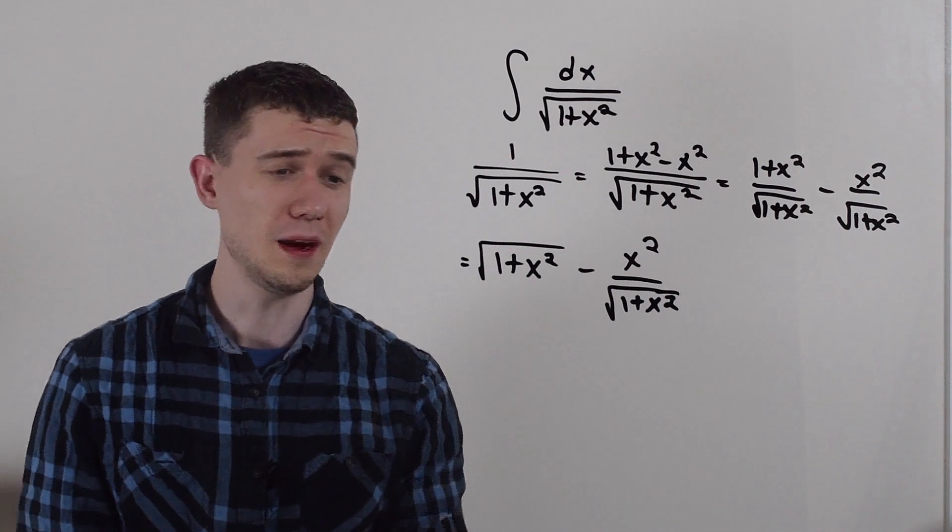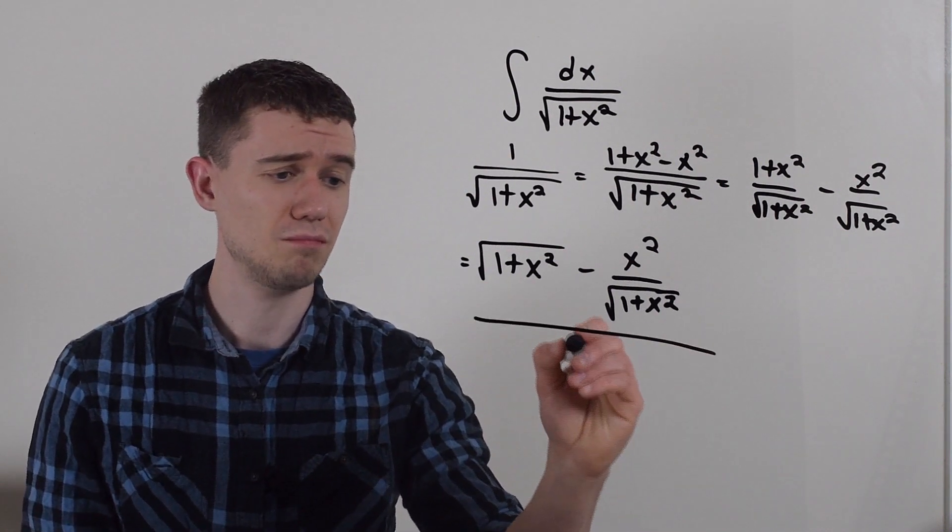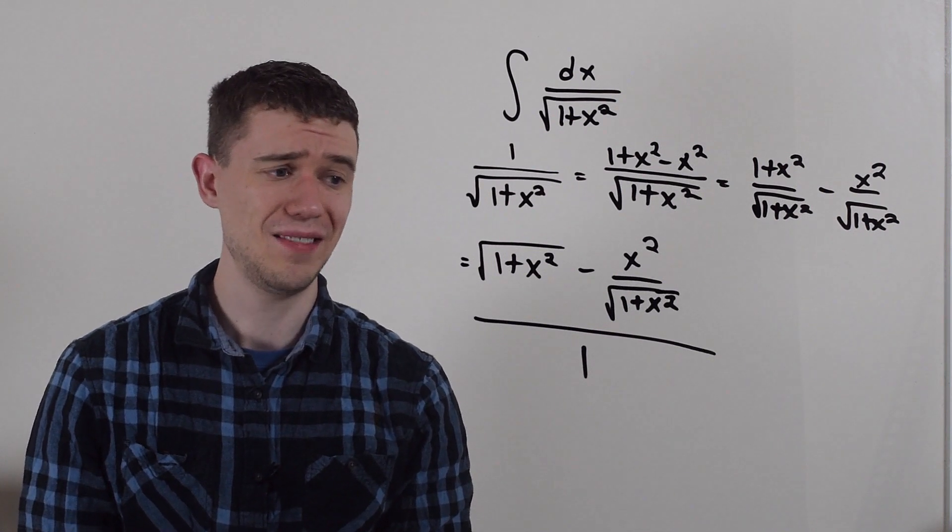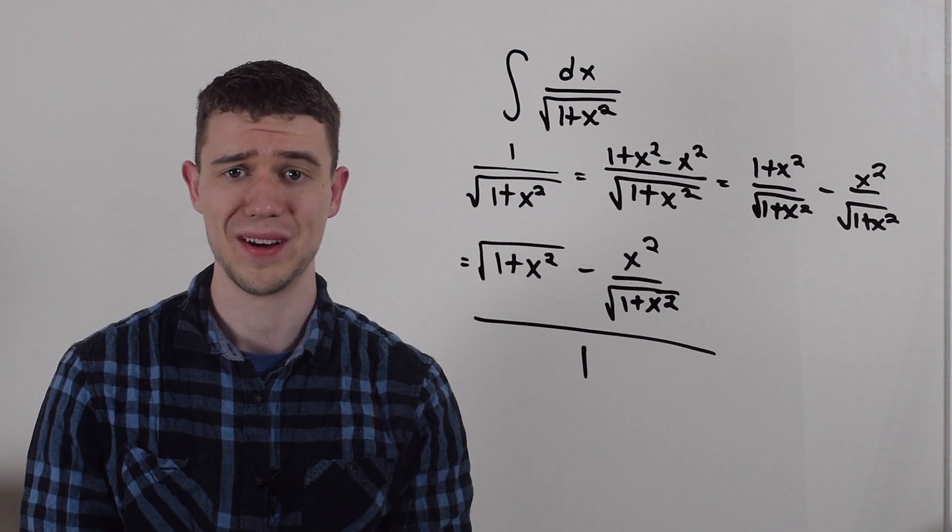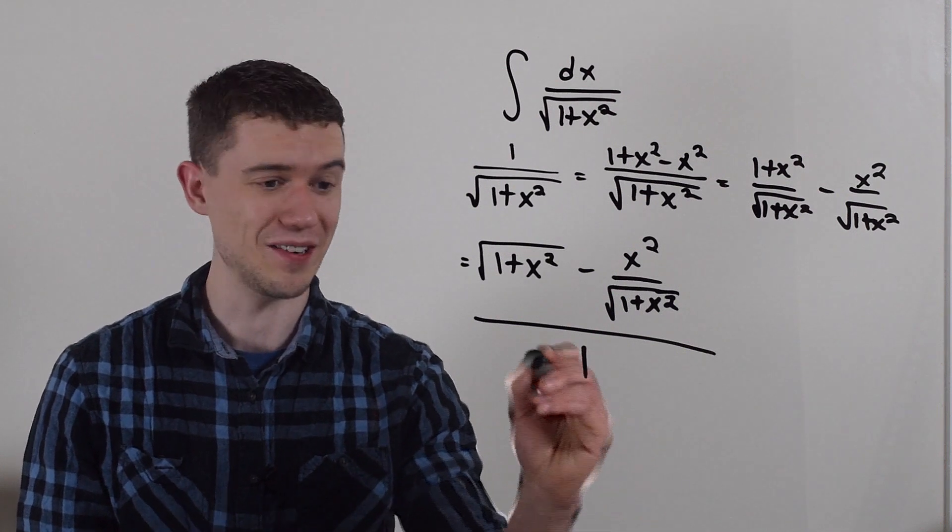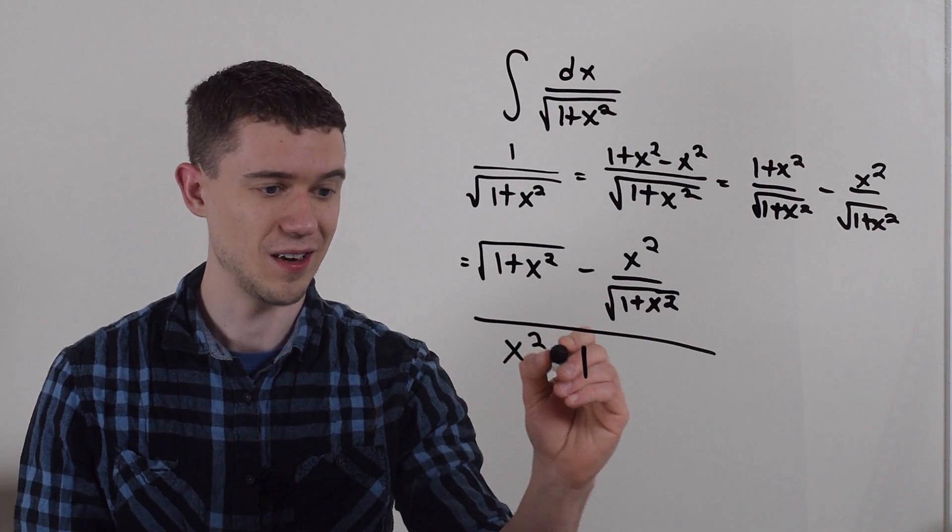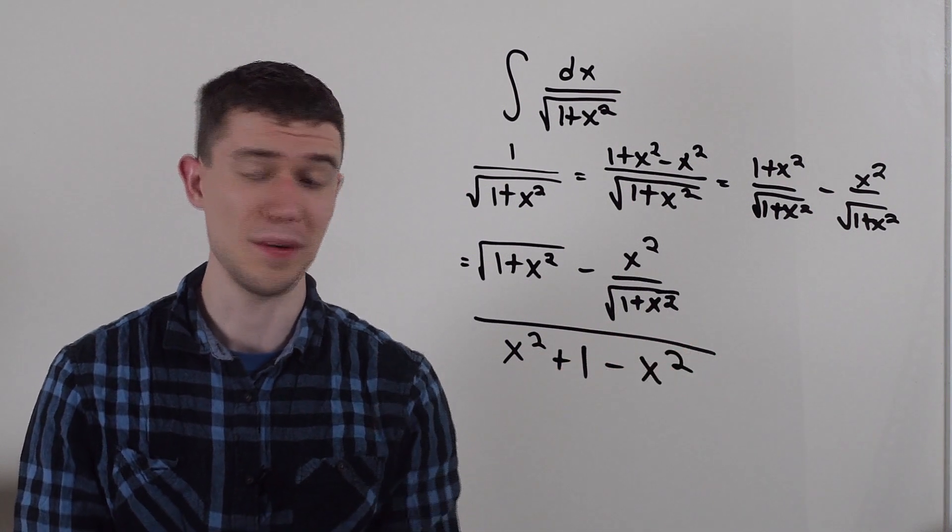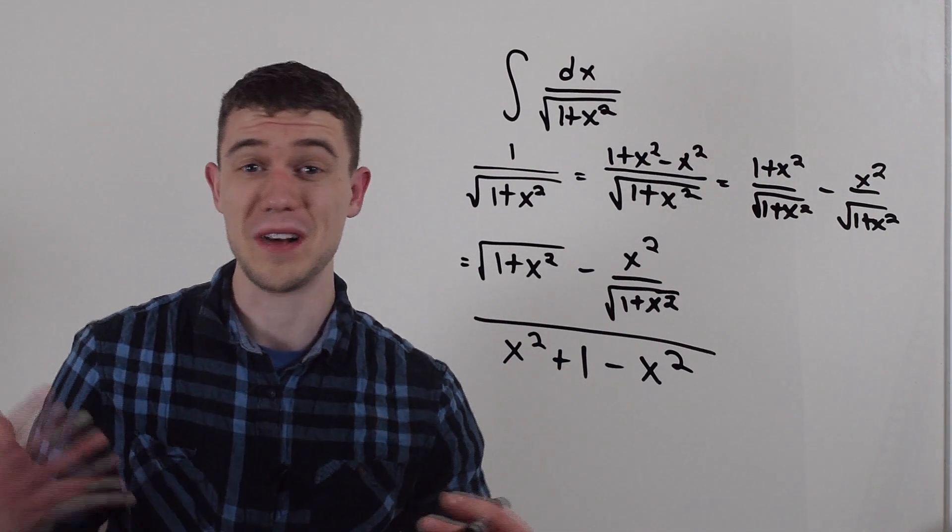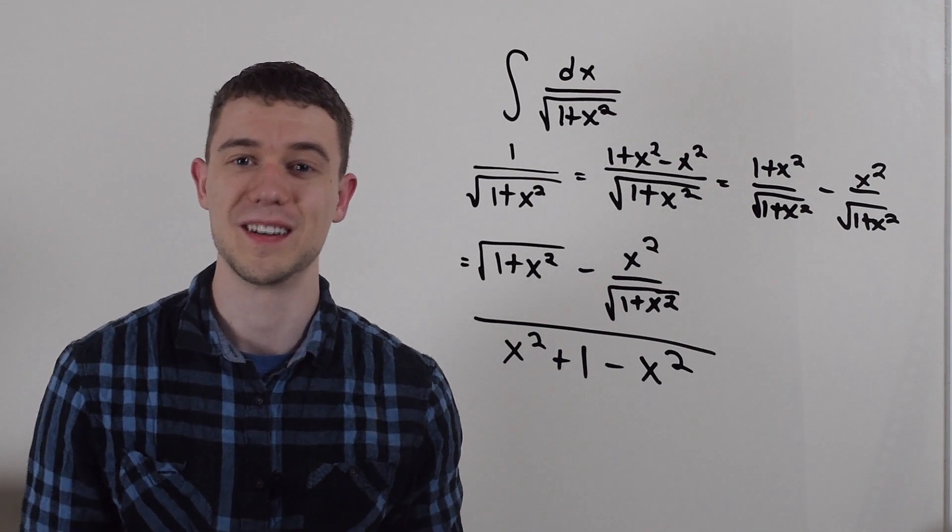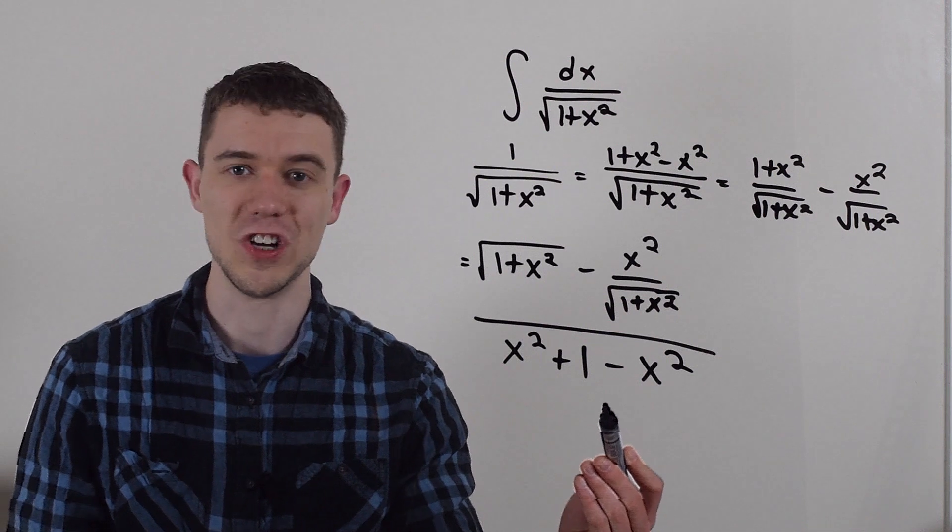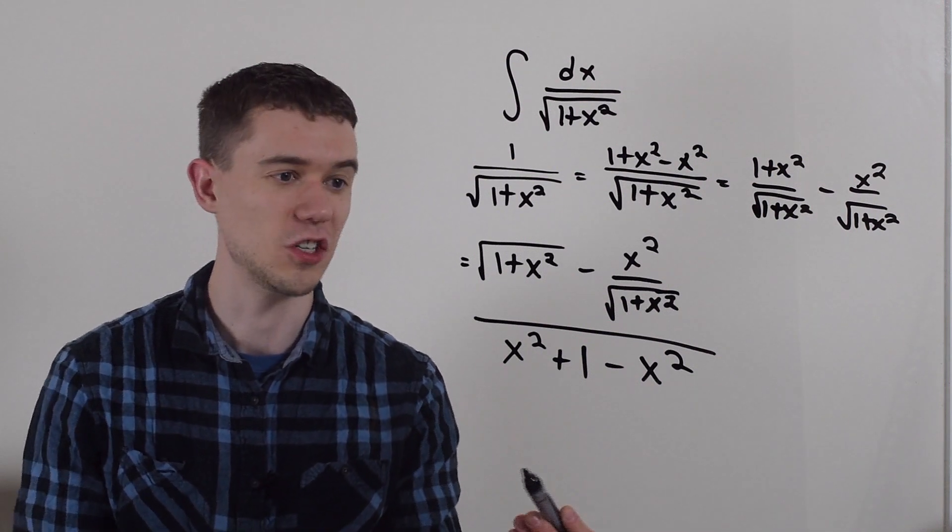And now here comes an even weirder part. I'm just going to pretend this is all a fraction all over 1. And even weirder now, I'm going to add and subtract x squared in the bottom here. So I'm going to say that this is x squared minus x squared. So this might seem super weird. I might have no clue why I'm doing this. But I'm just doing a bunch of weird algebra to make this integral something I can actually solve. I added 0, I divided by 1. That doesn't change anything. And I added 0 in the denominator. That's not going to change anything.